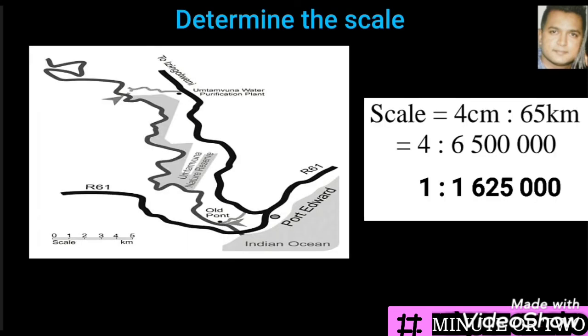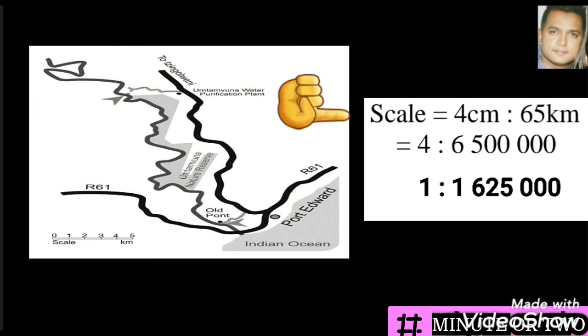So the first thing we will do is measure on the map the distance between Port Edward and the nature reserve. This measurement is 4 centimeters in our booklets. So now we write this information down as a scale: 4 centimeters on the map is equal to 65 kilometers on the ground. 65 kilometers is taken from the information given in the question.